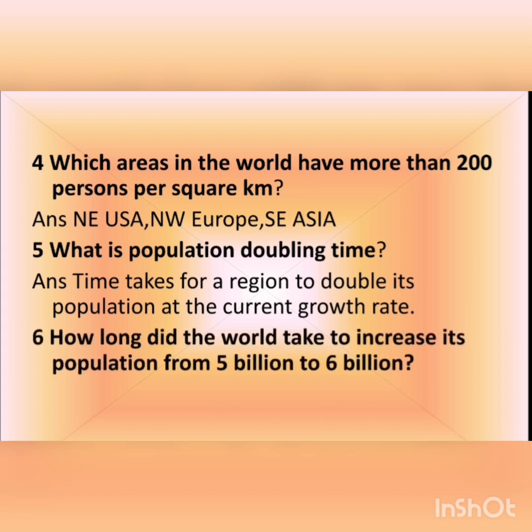The sixth question is: how long did the world take to increase its population from 5 billion to 6 billion? The answer is it took 12 years to rise from 5 billion to 6 billion.